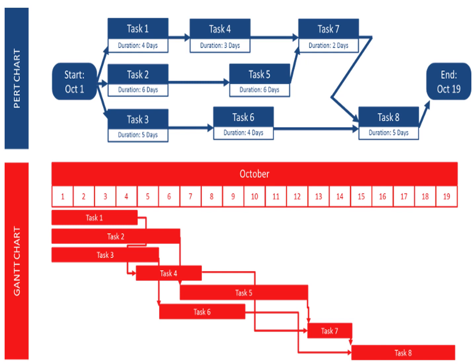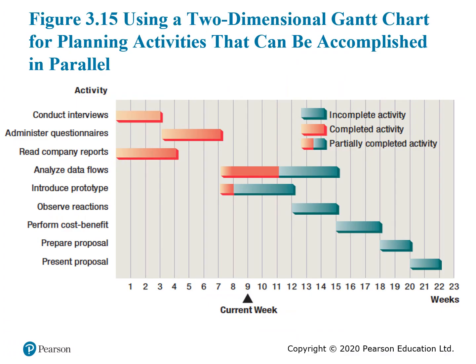For example, task four runs from approximately October 5th to October 7th — a duration of three days — and it also shows the responsibility. When you have parallel tasks it is better to use the PERT chart. Figure 3.15 illustrates using a two-dimensional Gantt chart for activities that can be accomplished in parallel, using different colors to differentiate them.